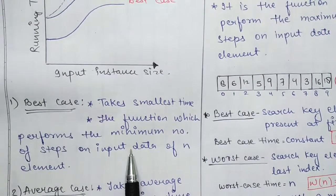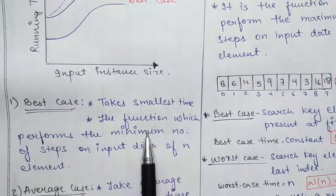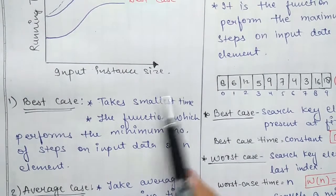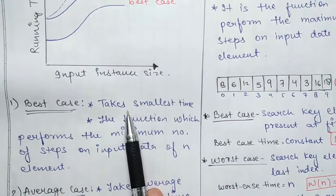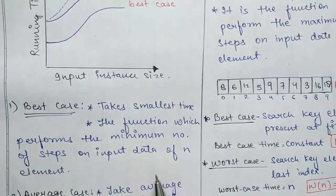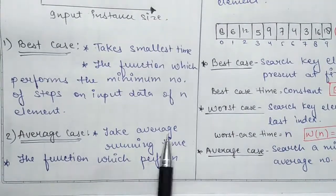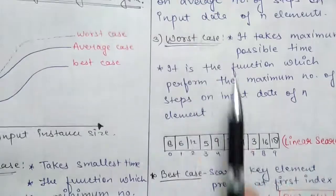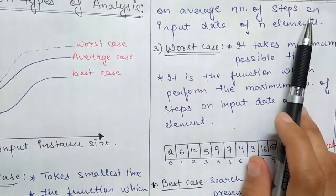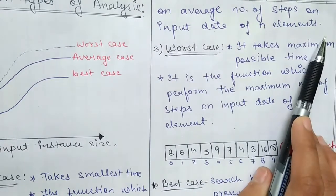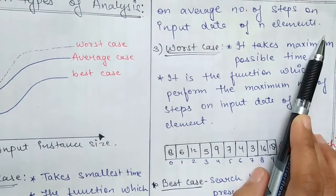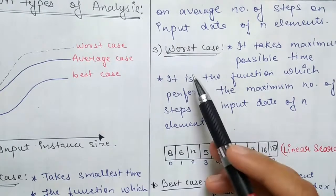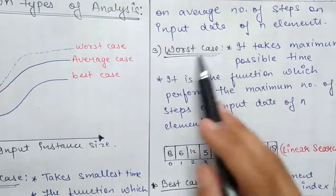The second point is: best case is the function which performs the minimum number of steps on input data of n elements. It is the minimum number of steps and the minimum running time. Average case is the function which performs an average number of steps on input data of n elements — more than best case but less than worst case.